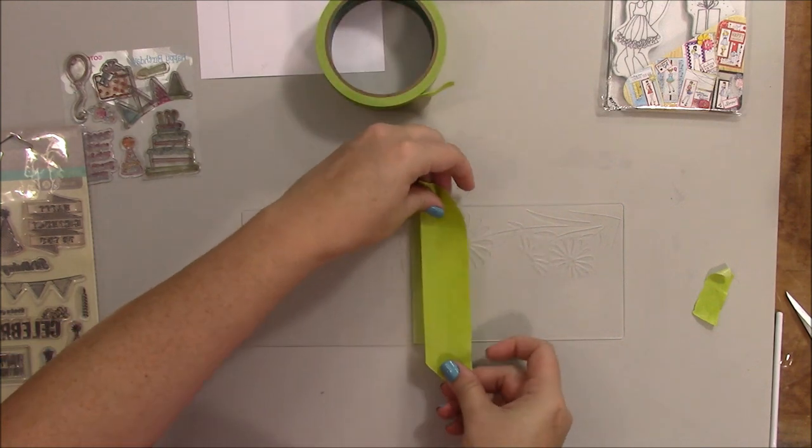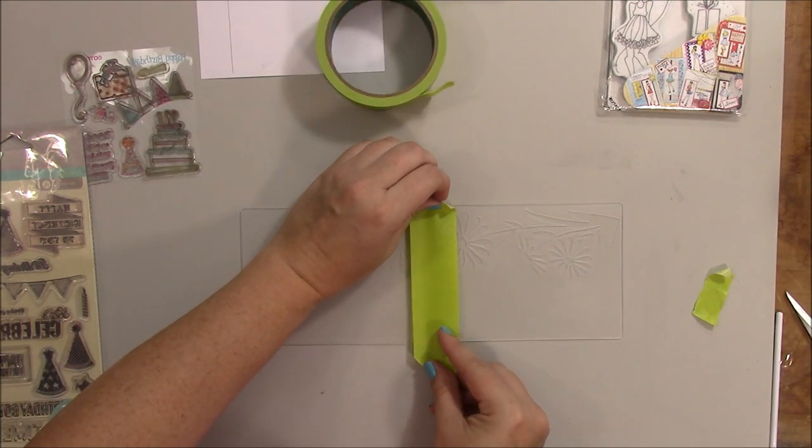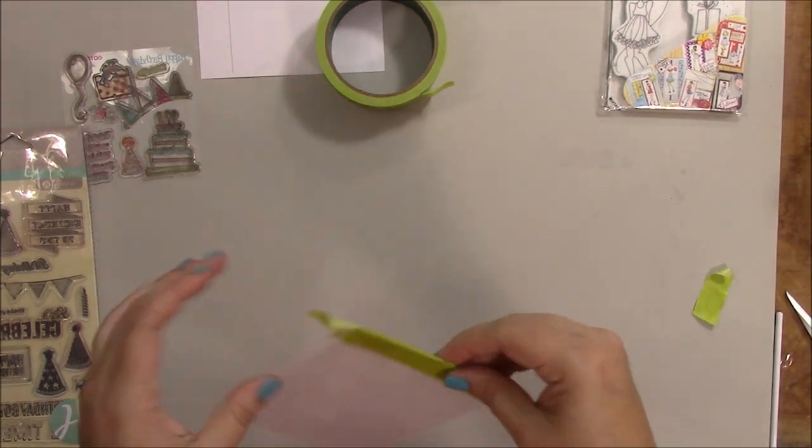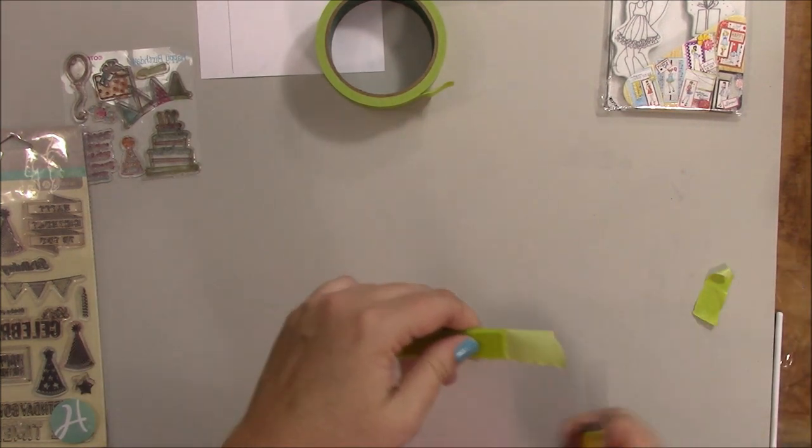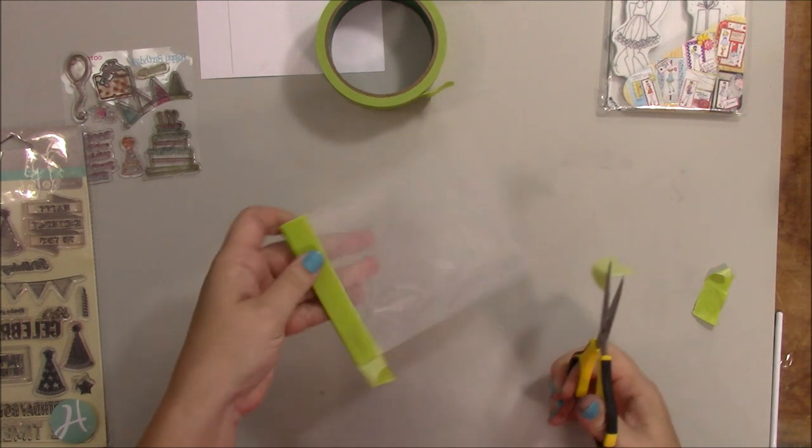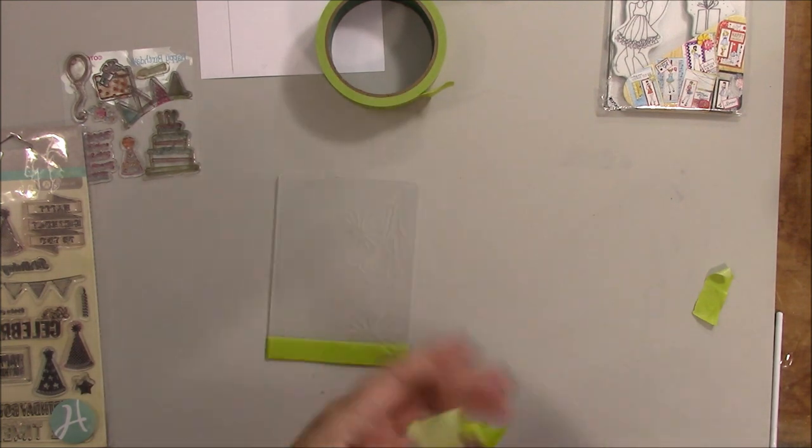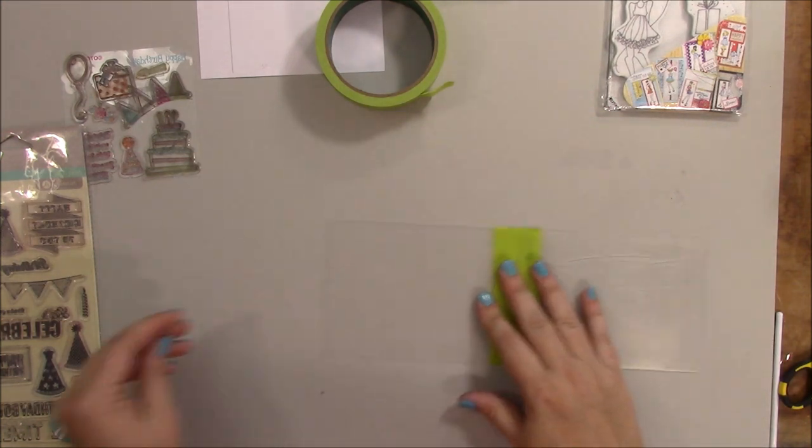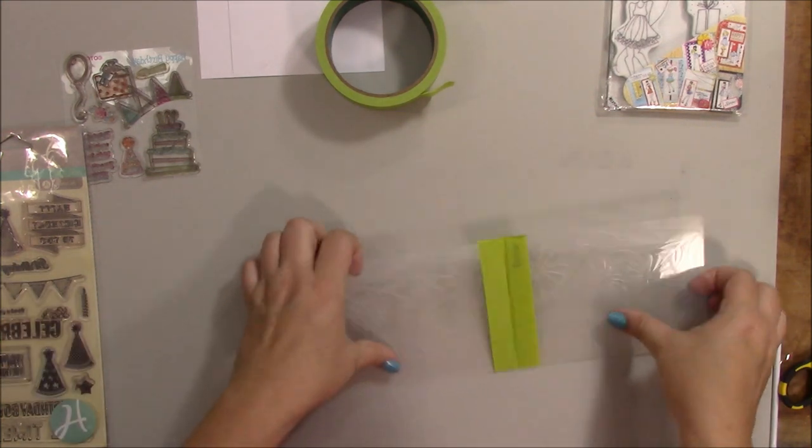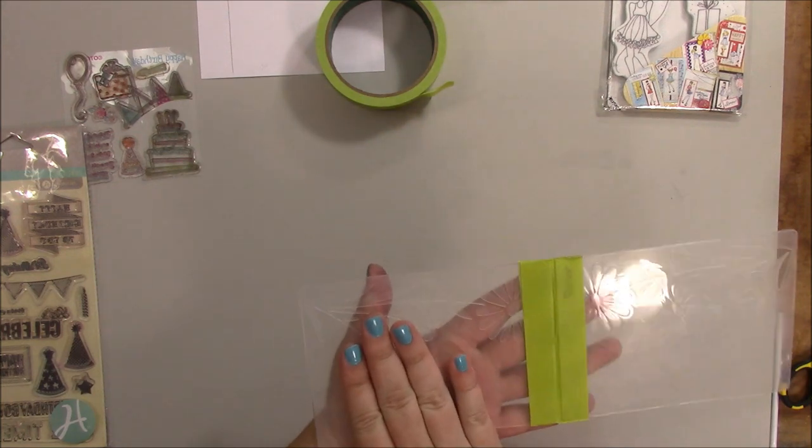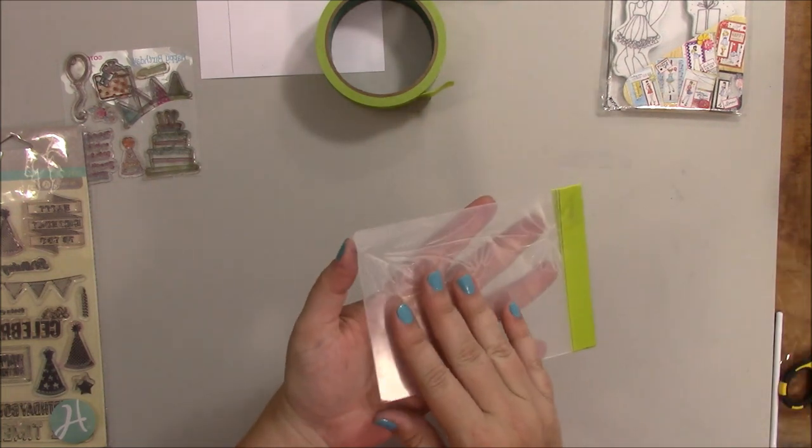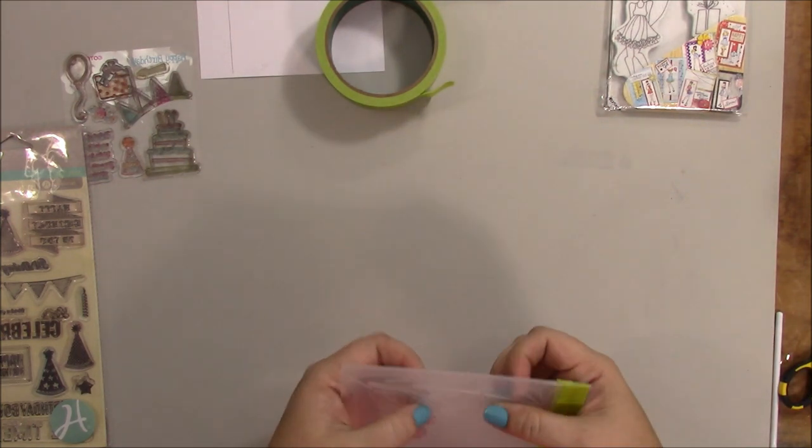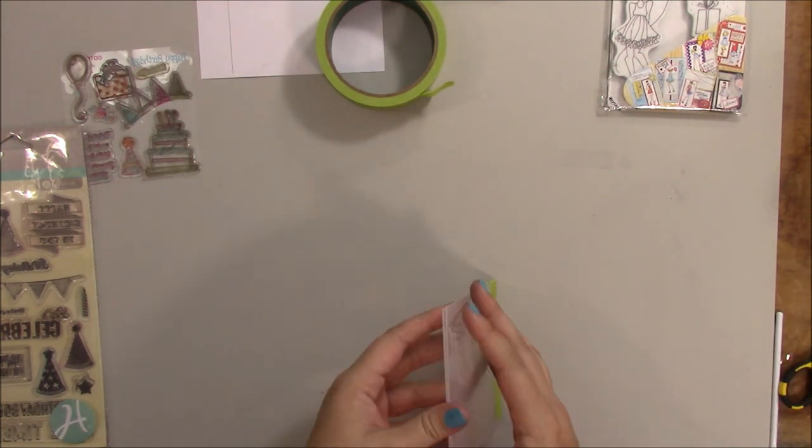And you can just line it up as best you can right on top of the other one. Okay. That's pretty sticky. Okay. So the smooth side of the embossing folder folds in because that's where our stamp is going to stick to, the smooth side. And the part that you normally emboss is towards the outside.